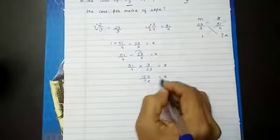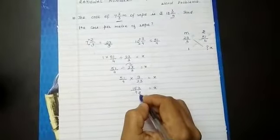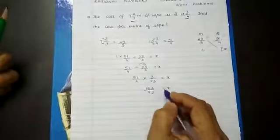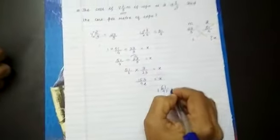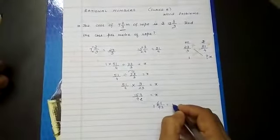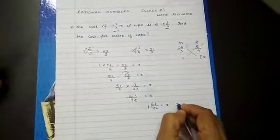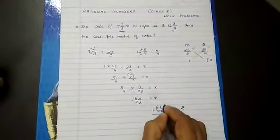So this x is 153 by 92. Now if you convert this into the mixed fraction you will get 1 and 61 by 92. That means per meter of rope costs us 1 and 61 by 92 rupees.